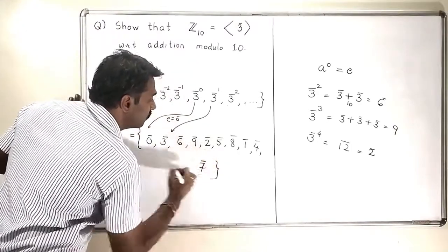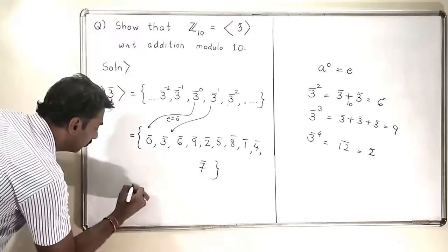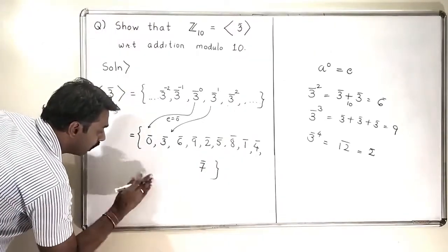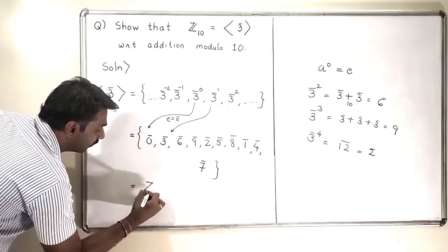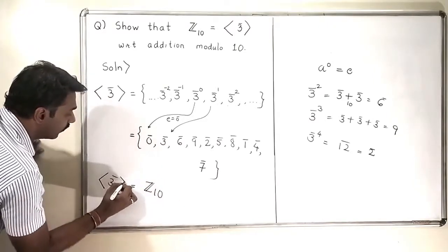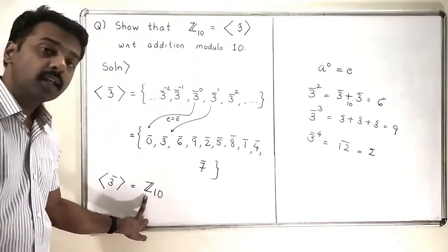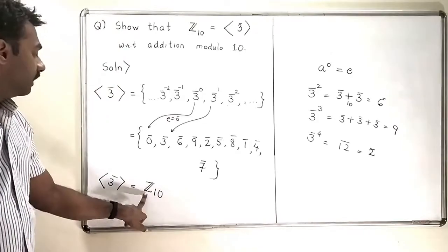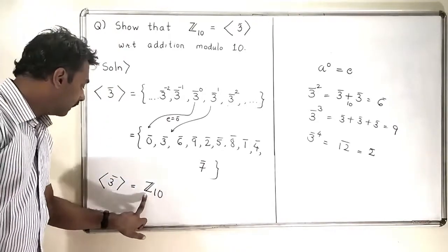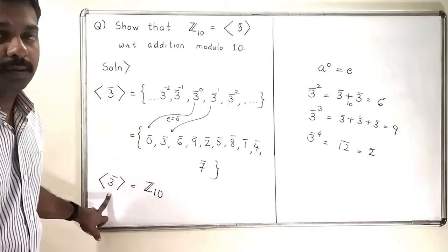And this finishes the list. All the 10 elements of Z₁₀ are covered and therefore this set is nothing but our Z₁₀. We have proved that the cyclic group generated by 3 bar is nothing but Z₁₀. This means that Z₁₀ is a cyclic group and the generator of Z₁₀ is 3 bar. This finishes this problem.